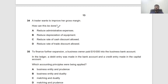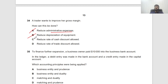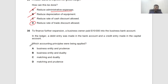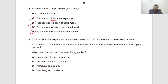Question 34: A trader wants to improve her gross margin. Reducing administrative expenses — no effect, those come after gross profit. Depreciation — after gross profit. Cash discount — after gross profit. By cancellation, the only option affecting gross margin is reducing the rate of trade discount allowed, which effectively raises the selling price and improves gross margin.